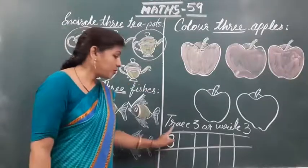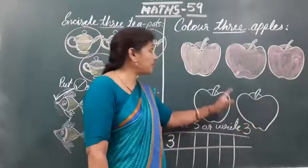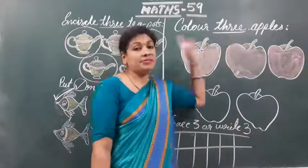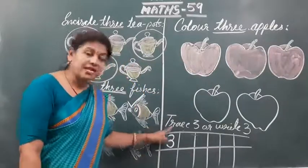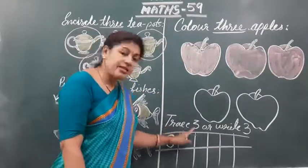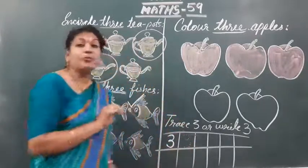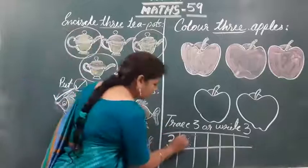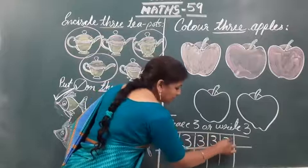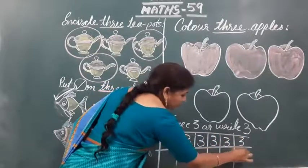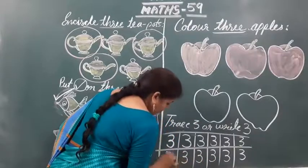Here is given trace three और write three. ये two apples को आपको छोड़ना है, because here only three apples are to be colored. Last one is given trace three — यहाँ पर dot dot करके ऐसे three बना हुआ है। आपको उसको trace करना है, ऐसे three बनाते जाना है। You know very well how to write three.